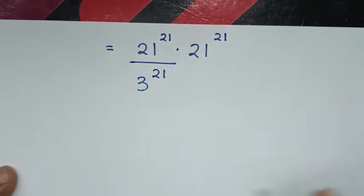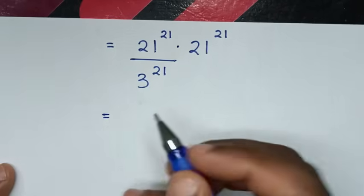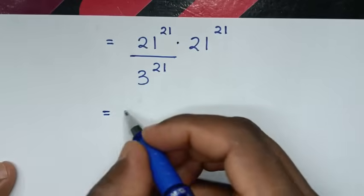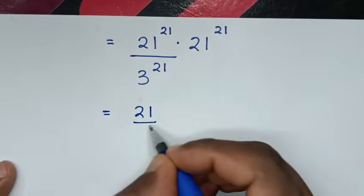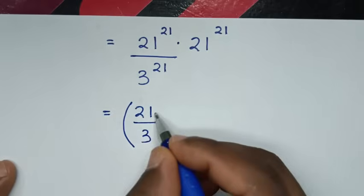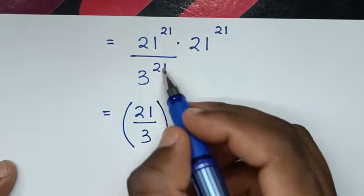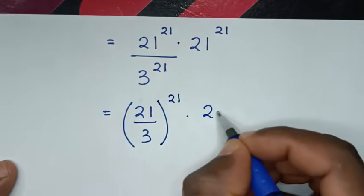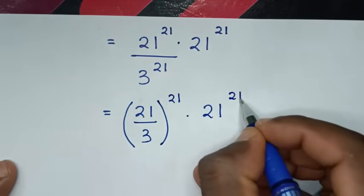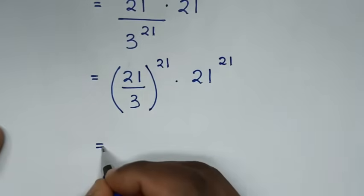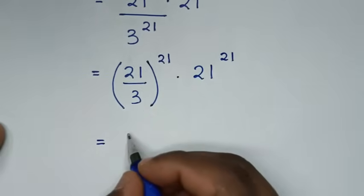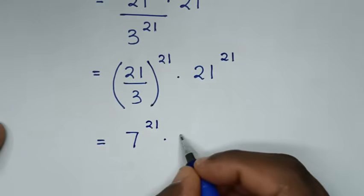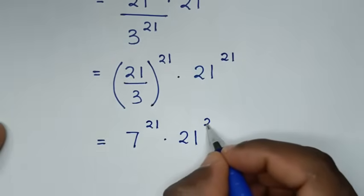Then here, it will be equal to: division of exponents with different bases but the same power of 21. So we take 21 power of 21 divided by 3 power of 21, which gives 7 power of 21, times 21 power of 21.